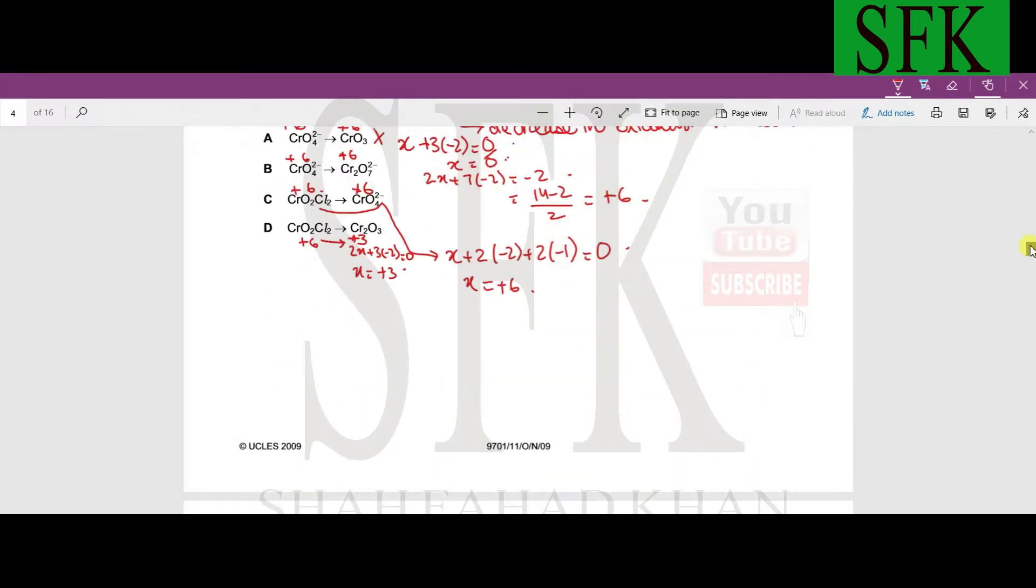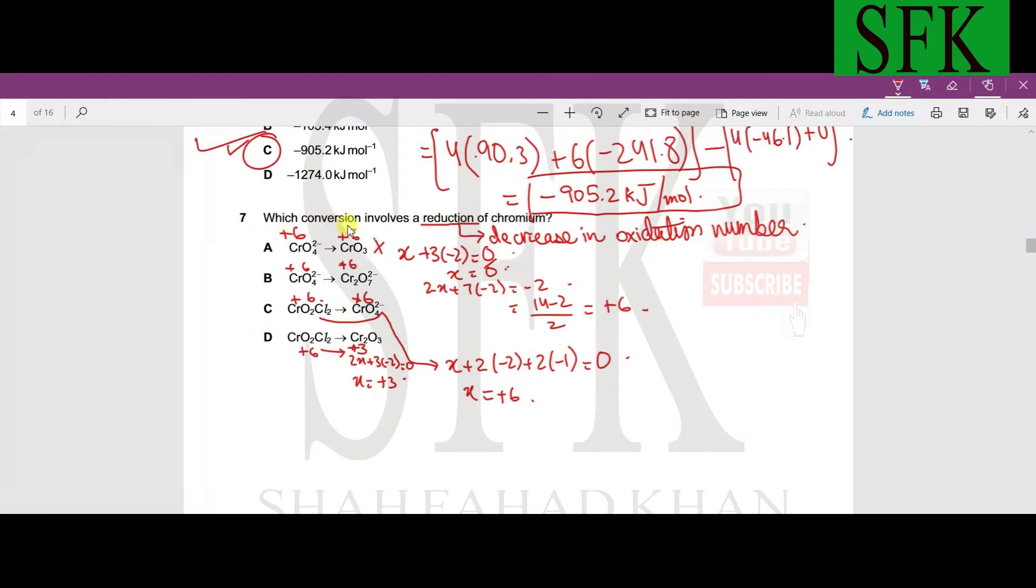Moving forward to the next question. In this question, which conversion involves a reduction of chromium? Reduction actually means the decrease in oxidation state or oxidation number. This is the best definition of reduction. I'm assuming that you guys already know how to calculate the oxidation numbers, so assign oxidation numbers in each of the MCQs to chromium.